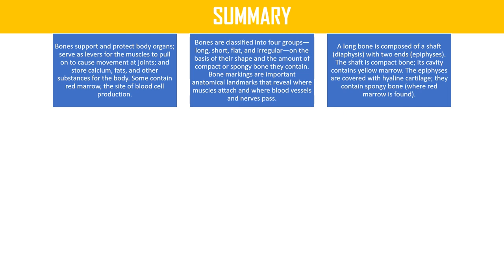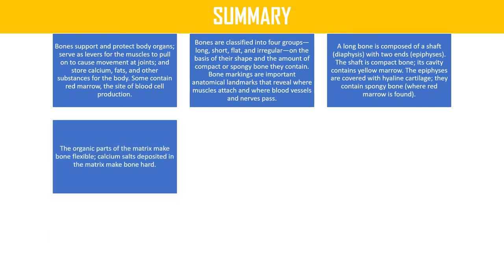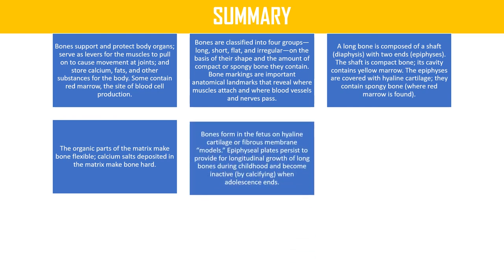A long bone is composed of a shaft (diaphysis) with two ends (epiphyses). The shaft is compact bone whose cavity contains yellow marrow. The epiphyses are covered with hyaline cartilage and contain spongy bone where red marrow is found. The organic part of the matrix makes bone flexible; calcium salt deposited in the matrix makes bone hard.